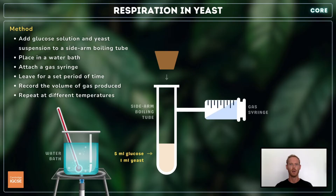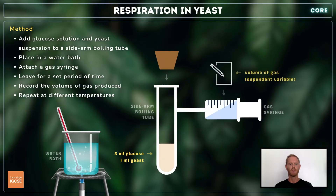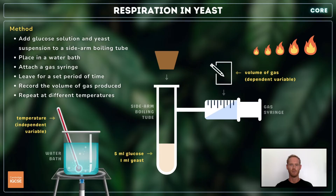Leave for a set period of time, allowing gas to collect in the syringe, and then record the volume of gas produced. Repeat the process at a range of different temperatures, making sure that all other variables are kept the same. Calculate the rate of gas production at each temperature, and plot your results on a graph.